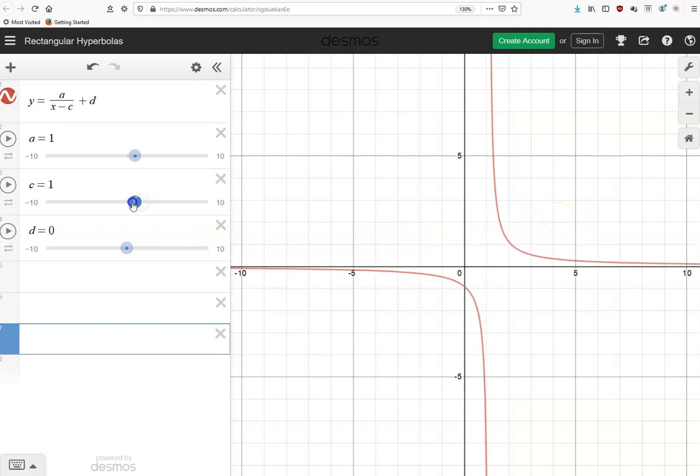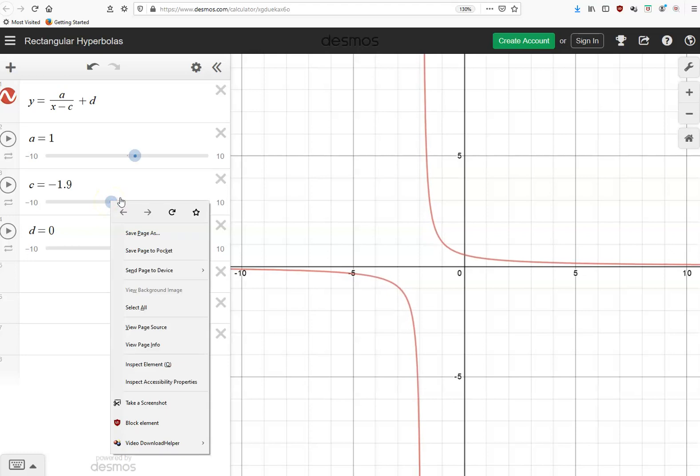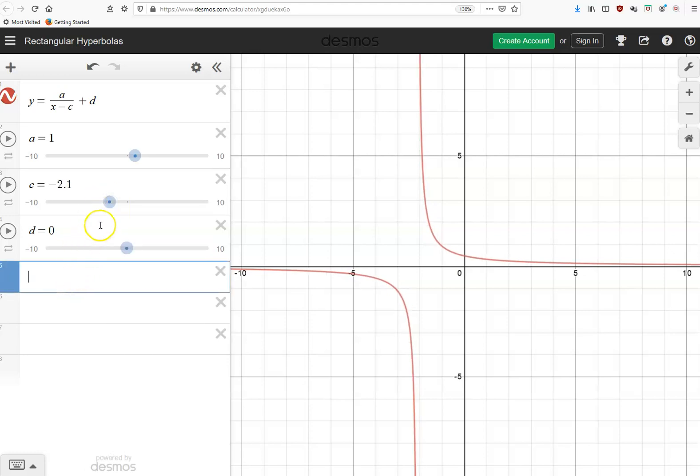And if c was negative, for example, at negative 2, then the point that was at 1, 1 is now at negative 1, 1. And similarly, the point that was at negative 1, negative 1, is now at negative 3, negative 1. So when c is negative, better move it a bit further. This is hard to get it exactly on the spot. There we go.